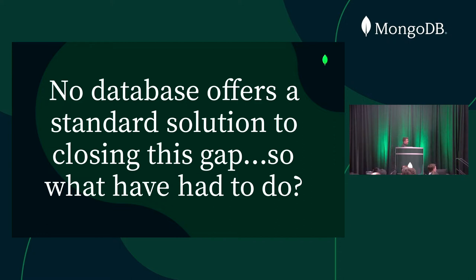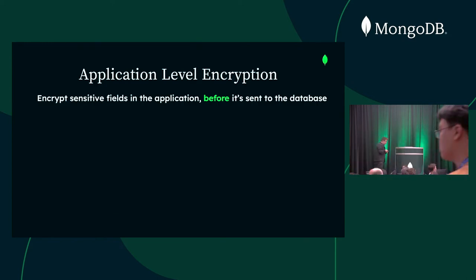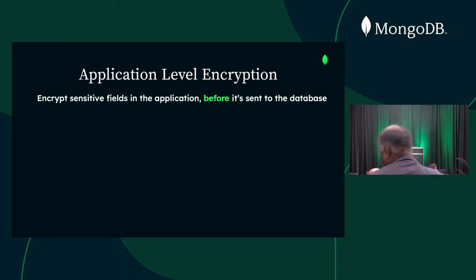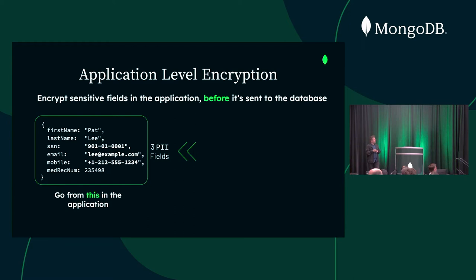The next generation of field-level encryption is going to be even more comprehensive — go to the session tomorrow to learn more. So what can you do? You could use application-level encryption, meaning you encrypt the data yourself on the client side. If you have three PII fields — social security number, email, and mobile — you add logic in your application code to encrypt those fields before they're sent to the database.